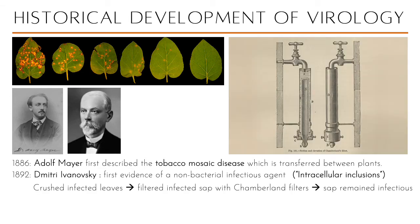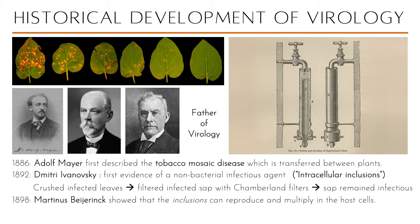How did he do it? He crushed infected leaves showing that mosaic lesion and filtered the sap through Chamberland filters — the same filters Pasteur used, which normally filter out bacteria. The sap remained infectious even after passing through the filters, so they figured out that whatever was causing this disease was not a bacterium.